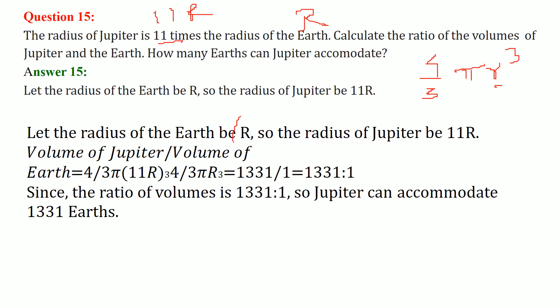Let us take the ratio of Jupiter and Earth. The volume will be 4/3 π (11r)^3 divided by r^3. 4/3 π will cancel out. This 11 cubed is equal to 1331. So this will be 1331 by 1. That is the ratio. So Jupiter can accommodate around 1331 Earths.